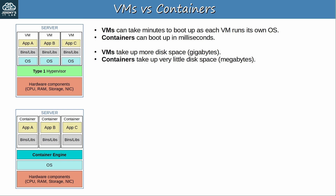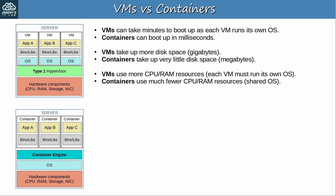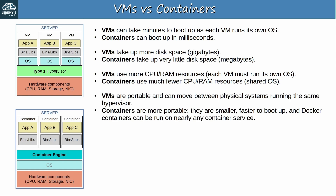VMs take up more disk space — often tens of gigabytes — whereas containers usually only take tens of megabytes. That stems from the fact that each VM includes its own OS, whereas a container only contains an app and its dependencies. For the same reason, VMs use more CPU and RAM resources compared to containers. Regarding portability, VMs are quite portable and can move between physical systems running the same hypervisor, but containers are even more so — they are smaller, faster to boot up, and Docker containers can be run on nearly any container service.